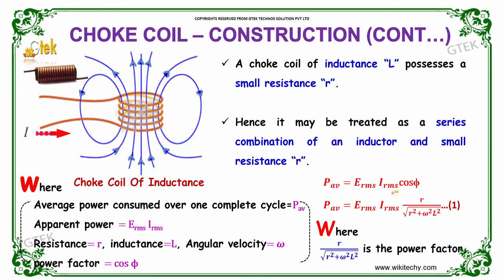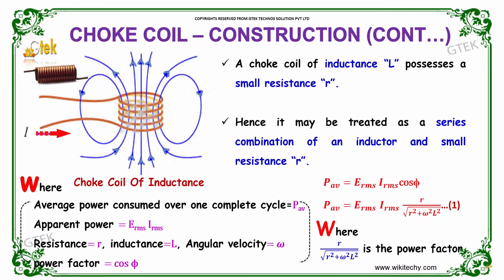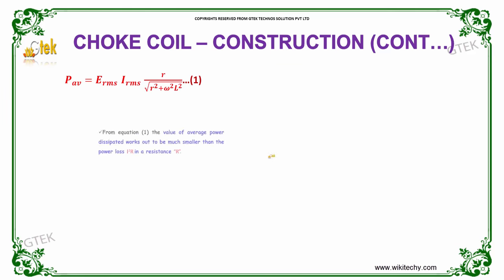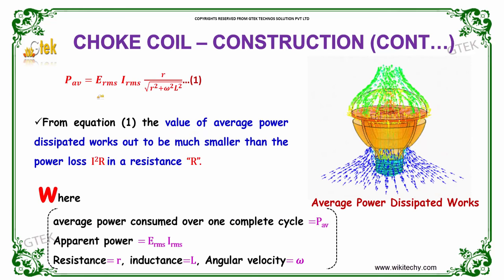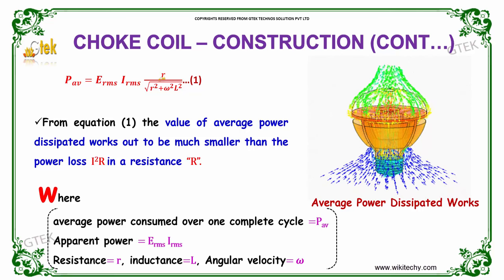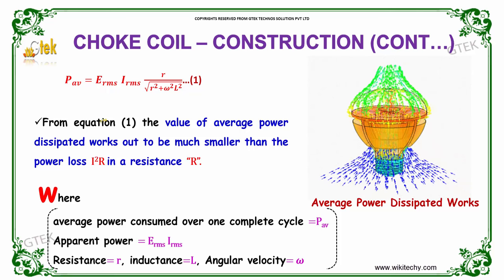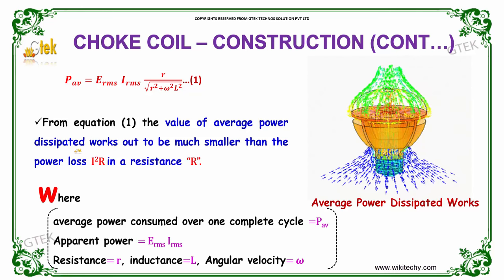cos φ can be replaced as R divided by the square root of R² + ω²L², which is considered as the power factor. So, the average power dissipated is E_RMS × I_RMS × R / √(R² + ω²L²), which works out to be really small — less than the power loss of I²R in a resistance R.